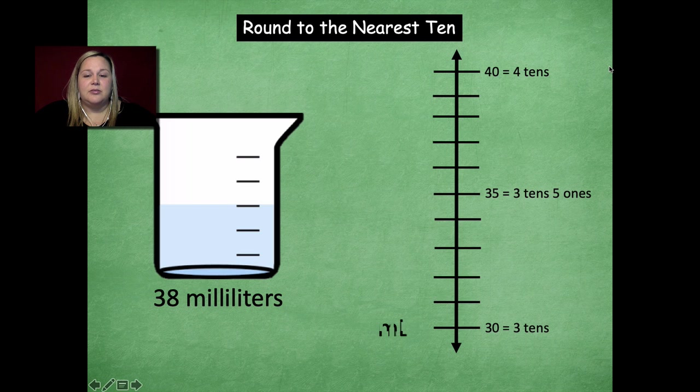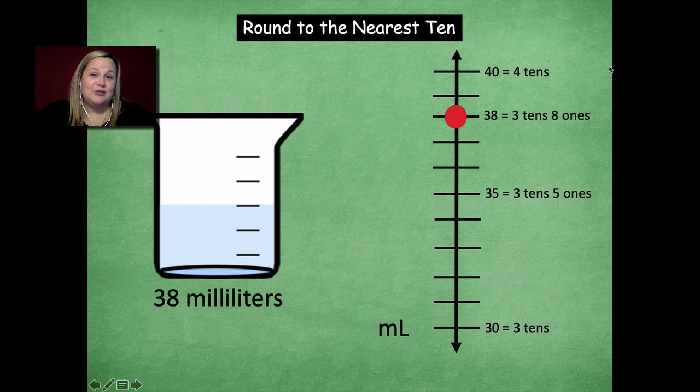Now we're going to label 38. So we start at 30 and go all the way up. 31, 32, 33, 34, 35, 36, 37, 38. So now I have to label that, which is 38 equals three tens, eight ones.